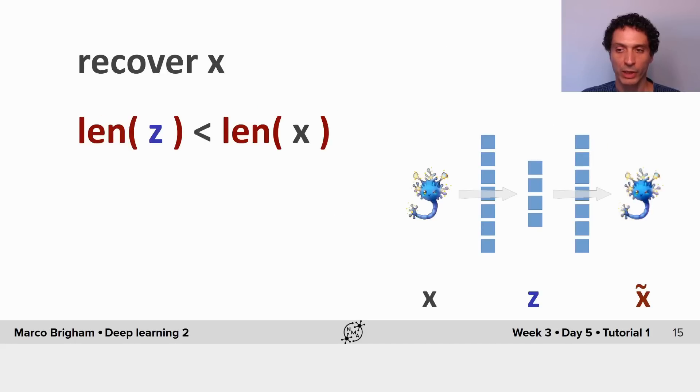Our autoencoder tries to recover the inputs x on the output and is constrained by representing the inputs into the bottleneck layer that has less units than our inputs and outputs.